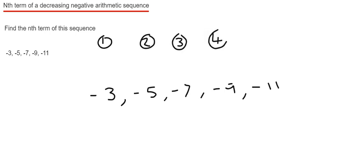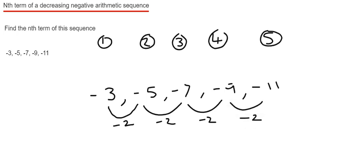What we're looking for is a little rule that takes us from these position numbers above the top to the numbers in the sequence. To do this, first thing you look at is what the sequence is going down in. You can see the term-to-term rule is minus 2.